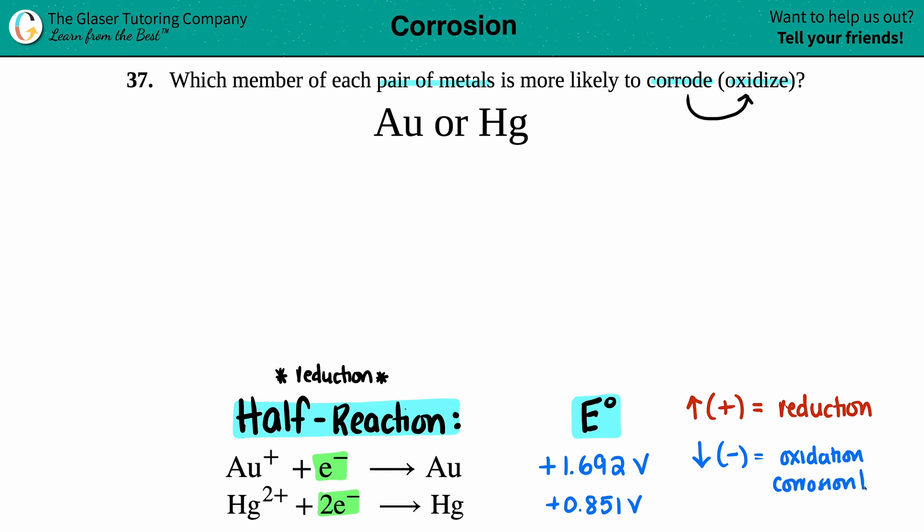So out of these two, we just have to pick the lower value. 1.692 versus 0.851. Obviously, 0.851 is lower than the other one. So which one would oxidize or corrode first? It would be good old mercury. And that is the final answer.